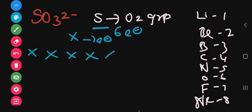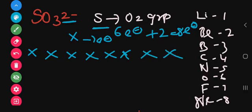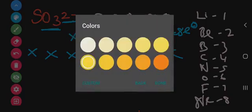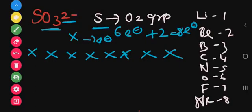And 2 electrons are gained because of the 2⁻ charge. So 6 plus 2 gives 8 electrons total — 1, 2, 3, 4, 5, 6, 7, 8. Next, sulfur has 3 oxygens attached. Oxygen's valency is 6, which is greater than 5.